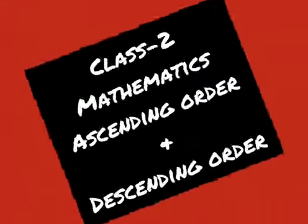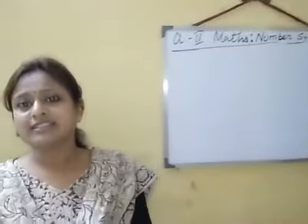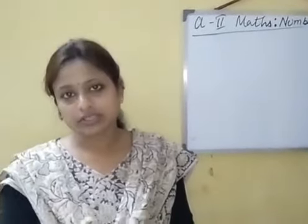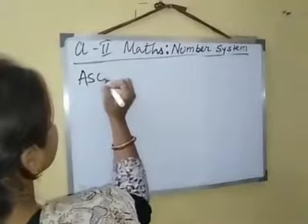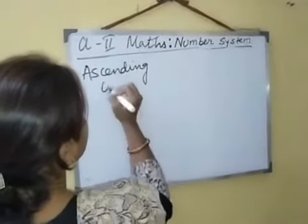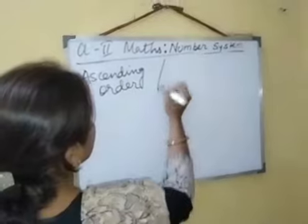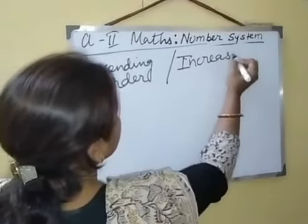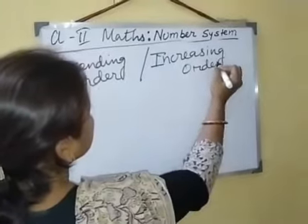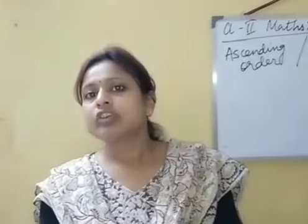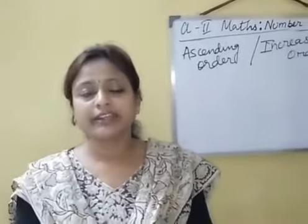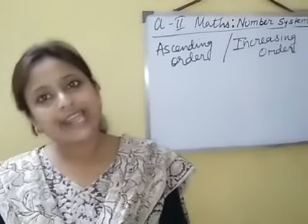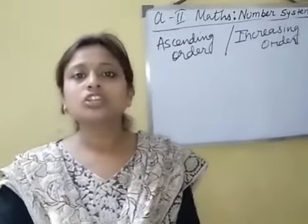Hello and good morning. Today in class we will know more about ascending and descending order. Do you know what is the other name of ascending order? Ascending order means increasing order. Now what is ascending order? It is the order in which the numbers are written or arranged from the smallest number to the biggest number.